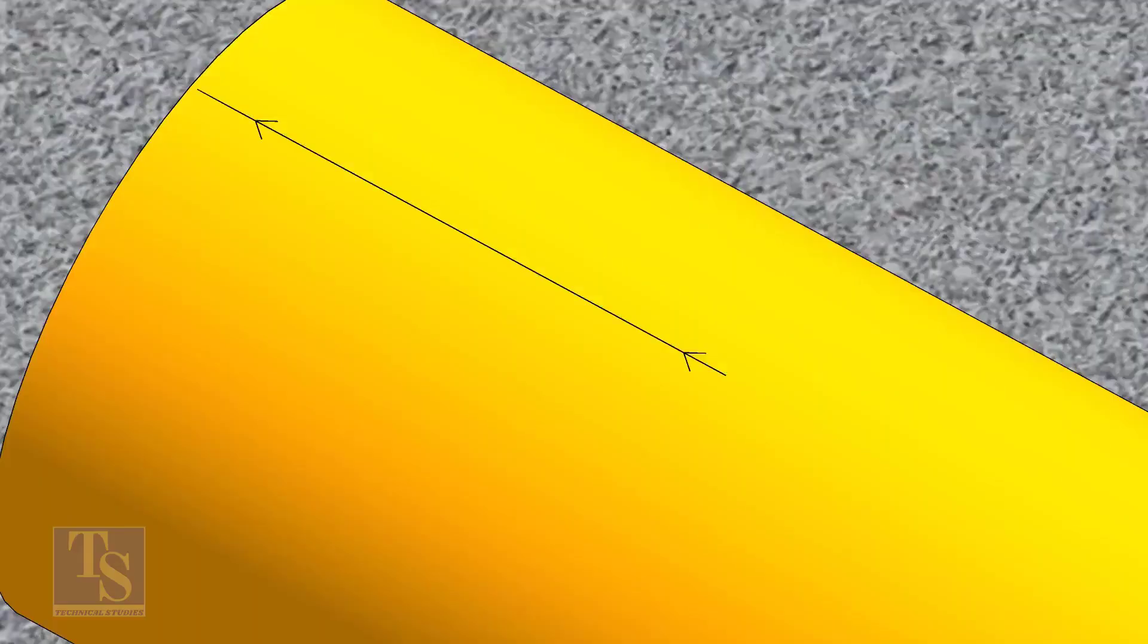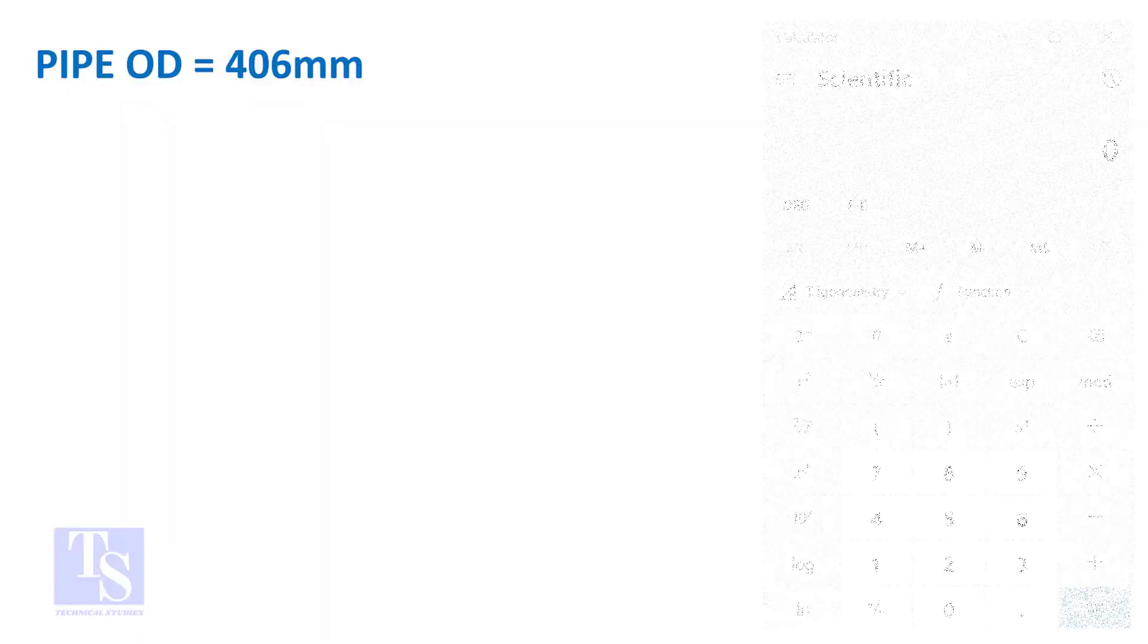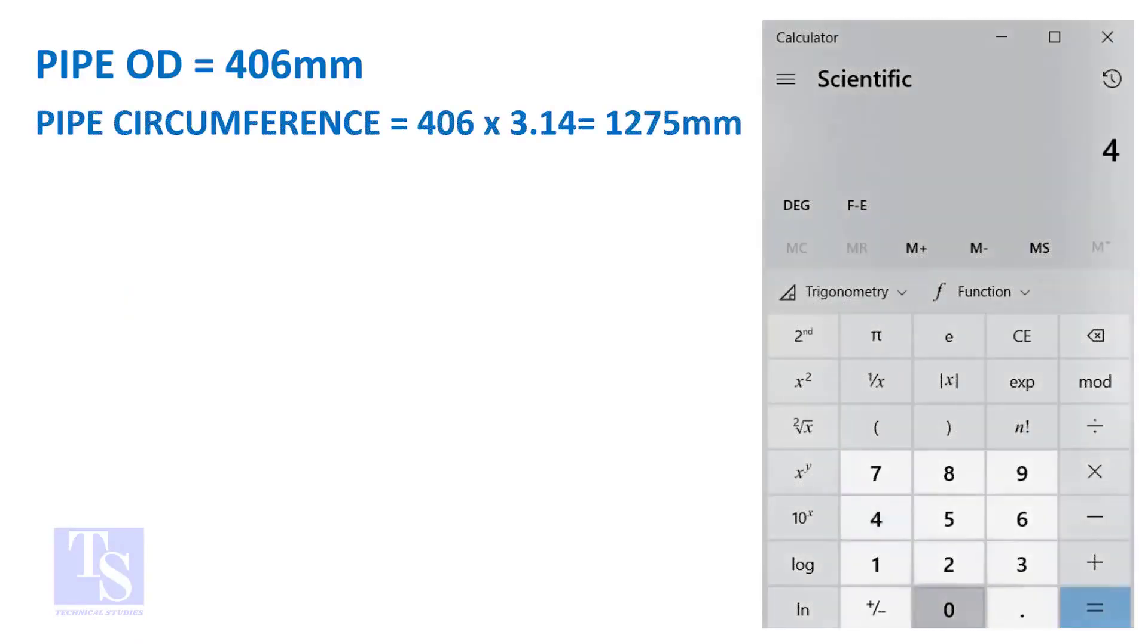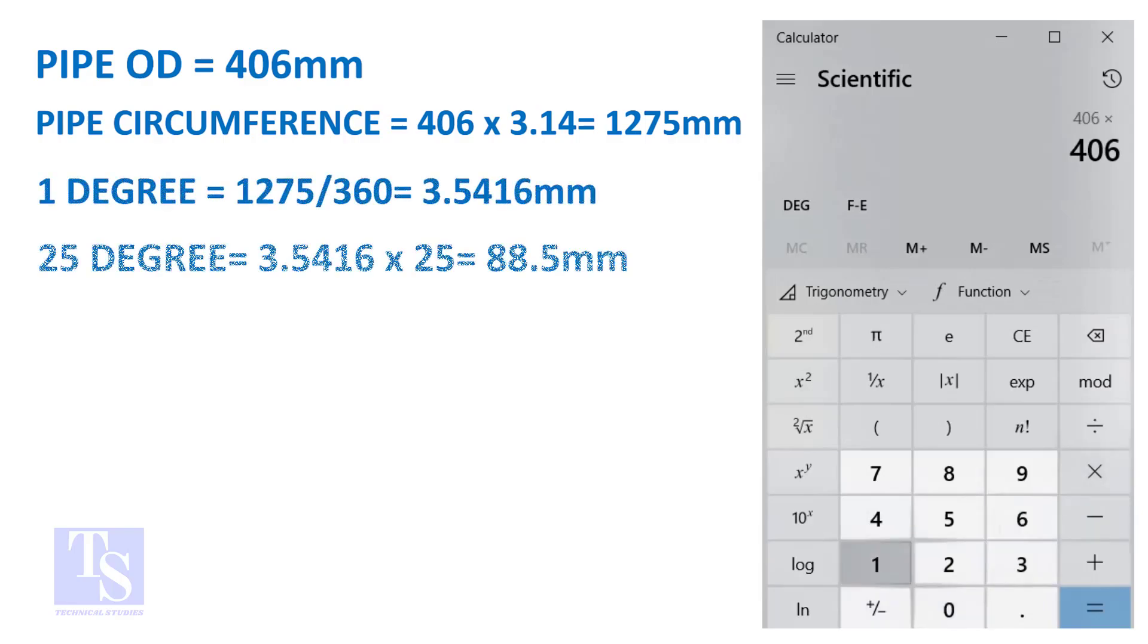Let us calculate the circumferential distance or arc length for 25 degrees. Multiply the OD by 3.14. You will get the circumference of the pipe. Divide the circumference by 360, you will get the arc length of 1 degree.